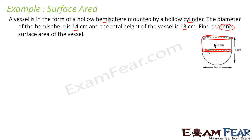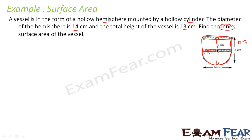The question says the diameter of the hemisphere is 14 cm, so the radius will be 7 cm. The total height of the vessel is 13 cm. Since the hemisphere has a radius of 7 cm, the height of the cylindrical part will be 13 minus 7, which equals 6 cm. For the cylinder, I need radius and height: radius is 7 cm and height is 6 cm. For the hemisphere, I need only the radius, which is 7 cm.